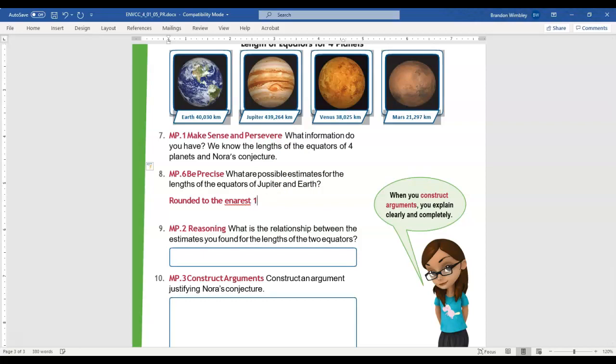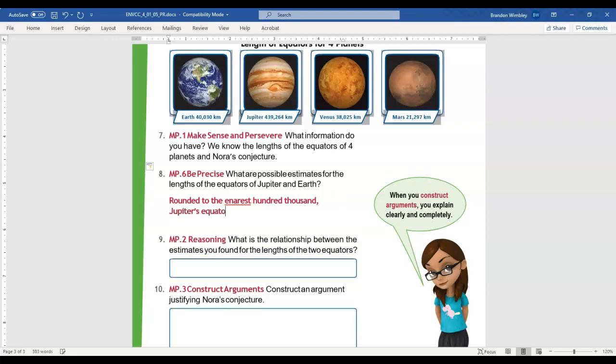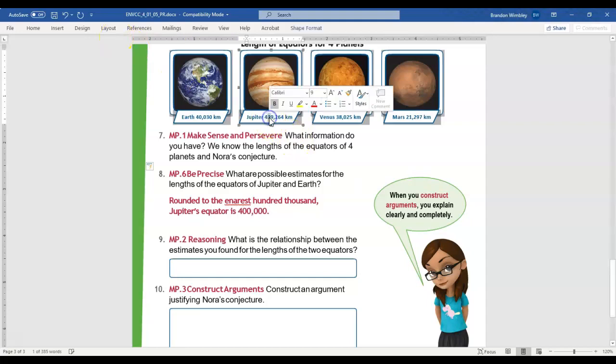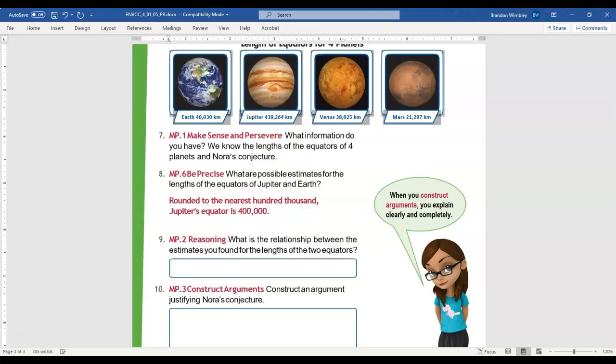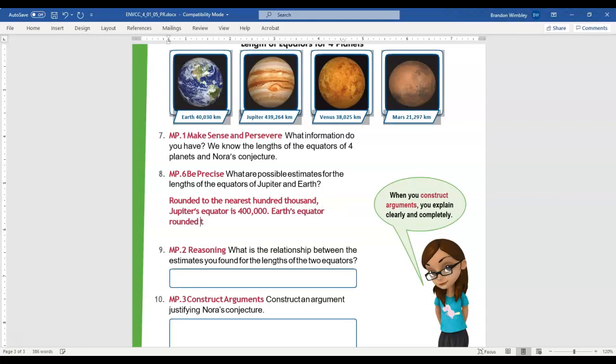Jupiter's equator is 400,000. So remember, I will go next door, and that's going to make me round down. I'm going to spell check now. Nearest. And now, what do I know about Earth's equator? Earth's equator rounded to the nearest 10,000 is 40,000.